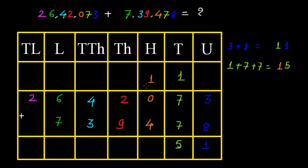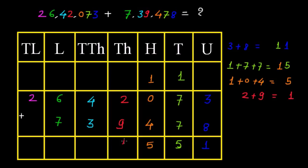Now let us do the addition of 1 plus 0 plus 4, which is equal to 5. Then 2 plus 9 is equal to 11, so we carry forward 1 to the ten-thousands place. Now we are adding 1 plus 4 plus 3 — these are 1 ten-thousand, 4 ten-thousand, and 3 ten-thousand — so this becomes 8. I must write 8 here.